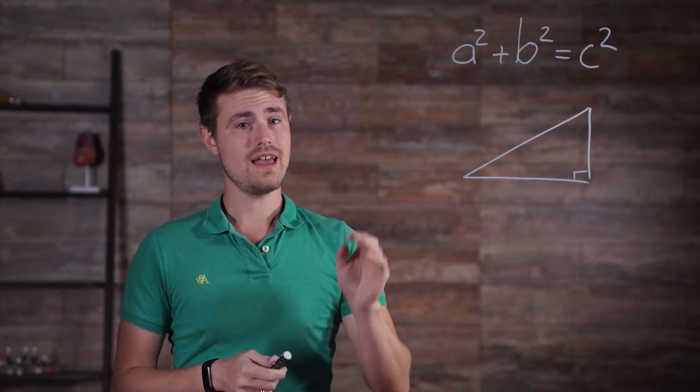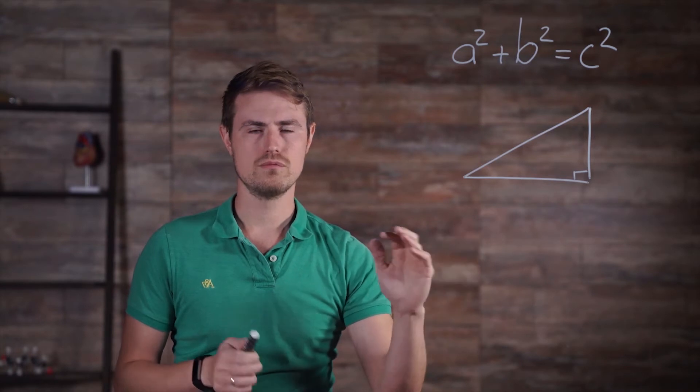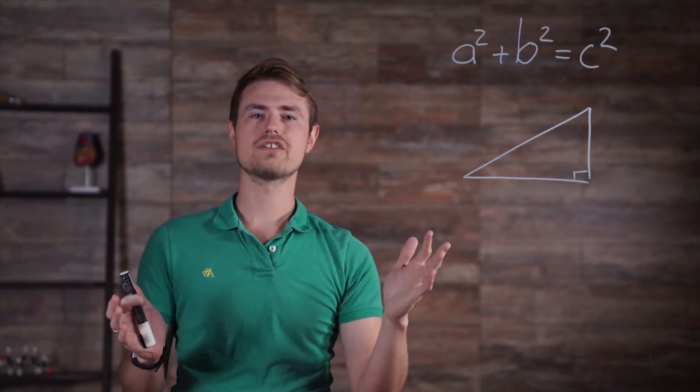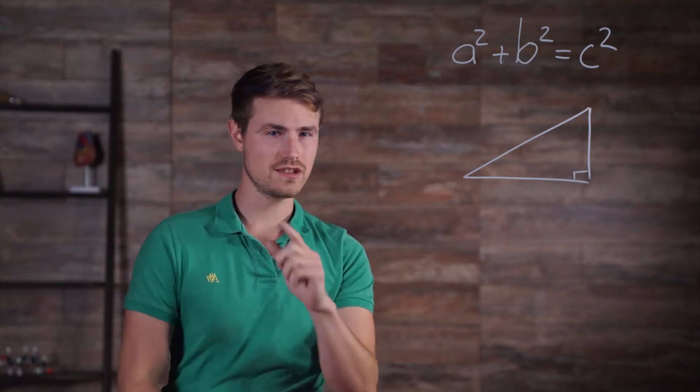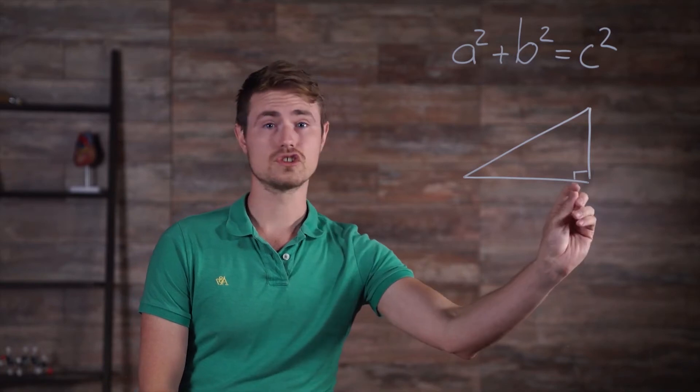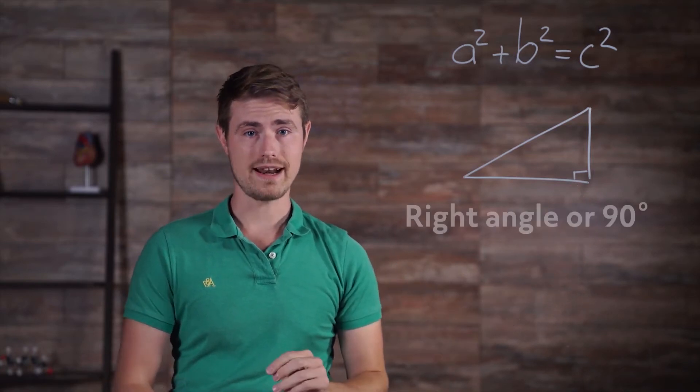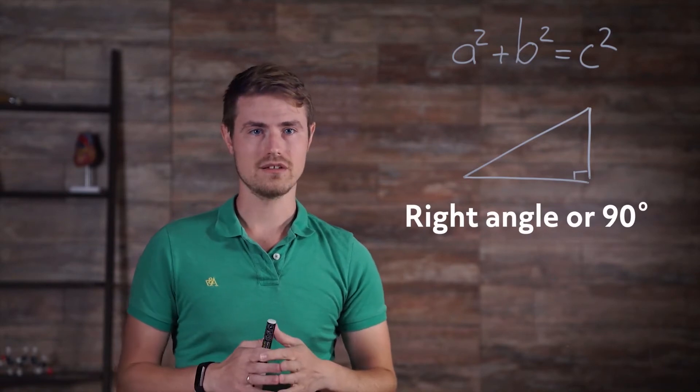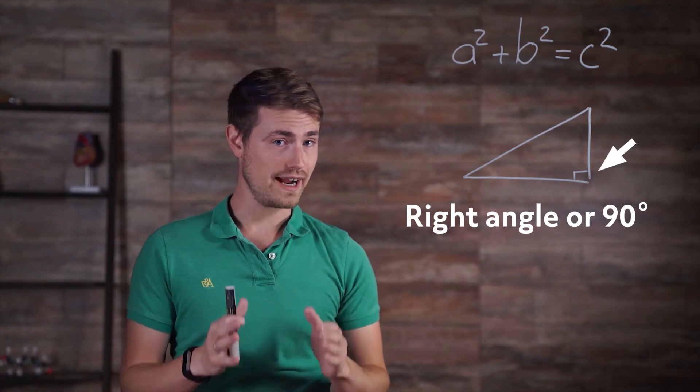In the theorem, a, b, and c are the lengths of the three sides of the triangle, but which is which? Let's start by figuring out where to find a, b, and c in a triangle. To start, you can tell that you're dealing with a right triangle because you see this little square in one of the angles. That's the symbol for a right angle, or 90 degree angle. And any triangle that has a right angle must be a right triangle.